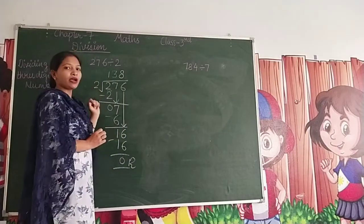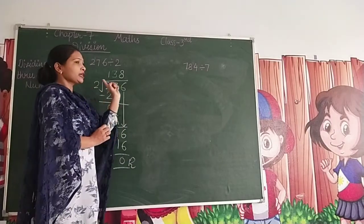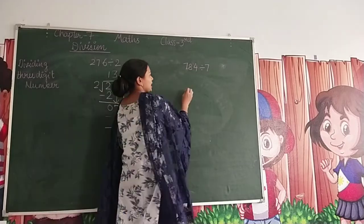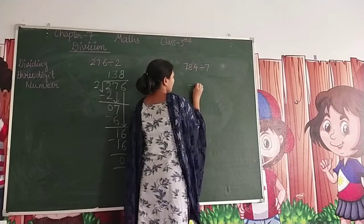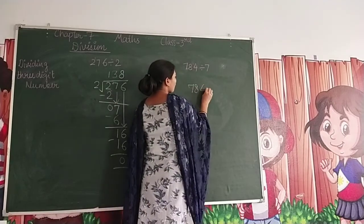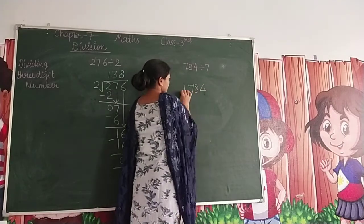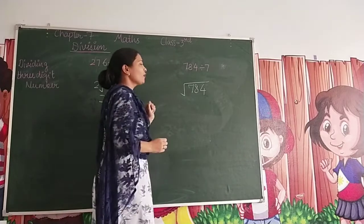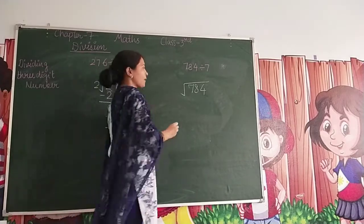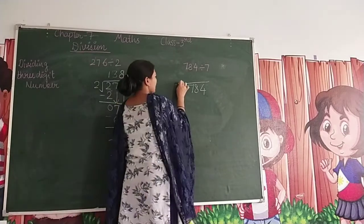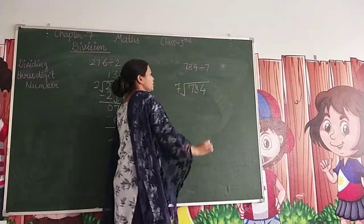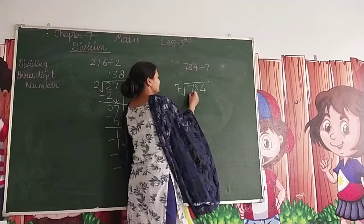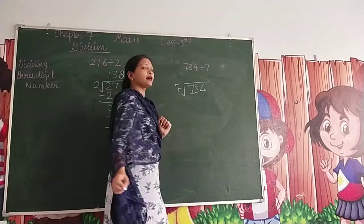Next we have a second problem. 784 divided by 4.